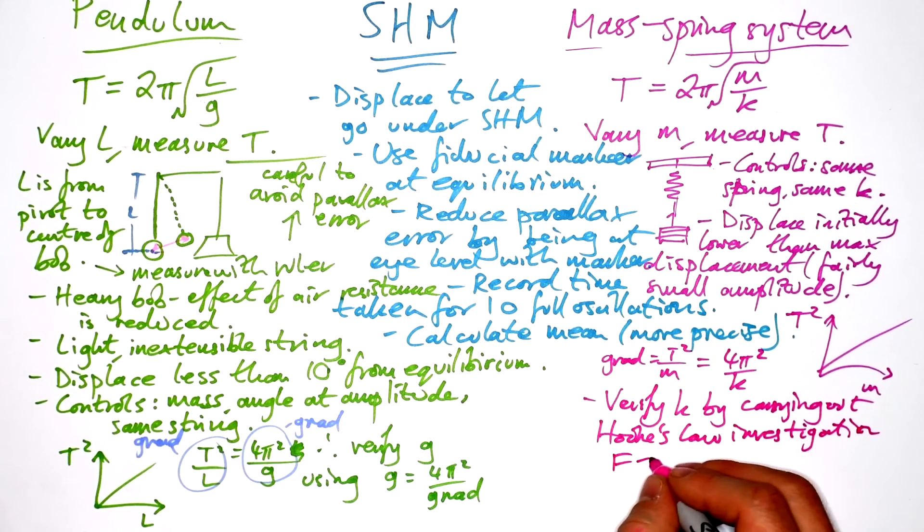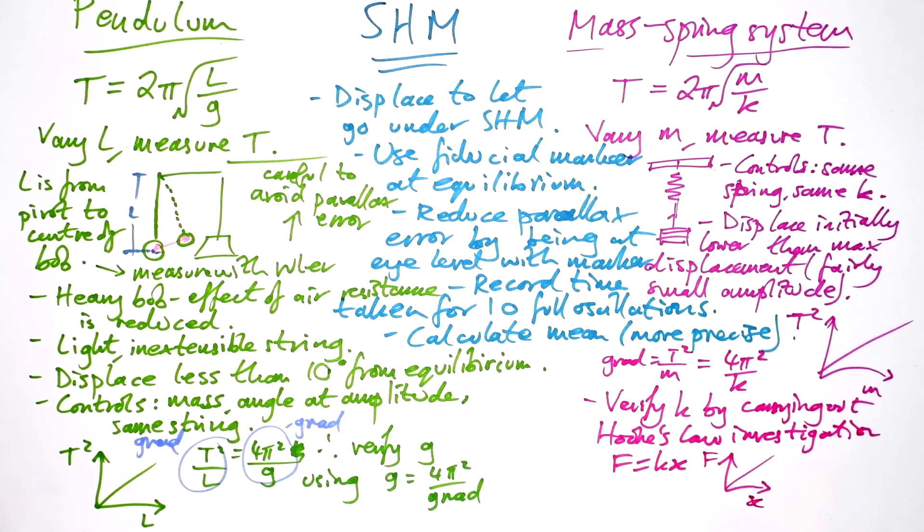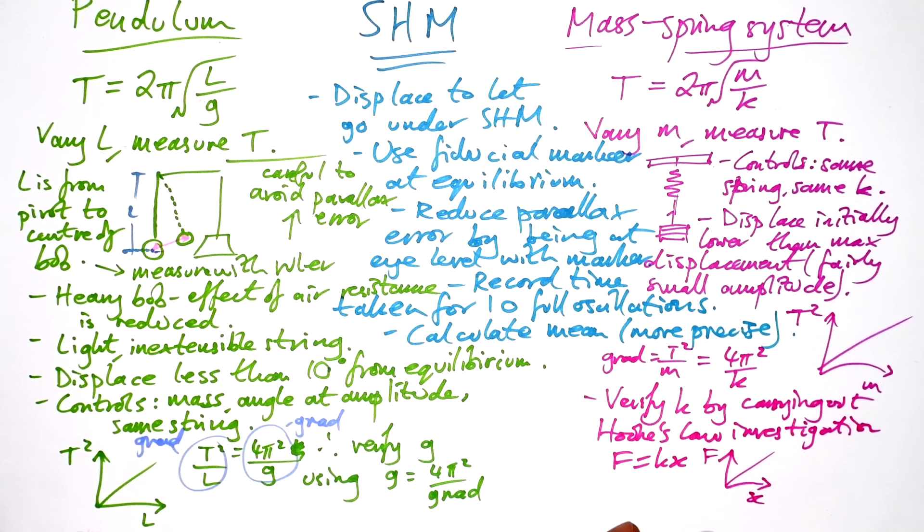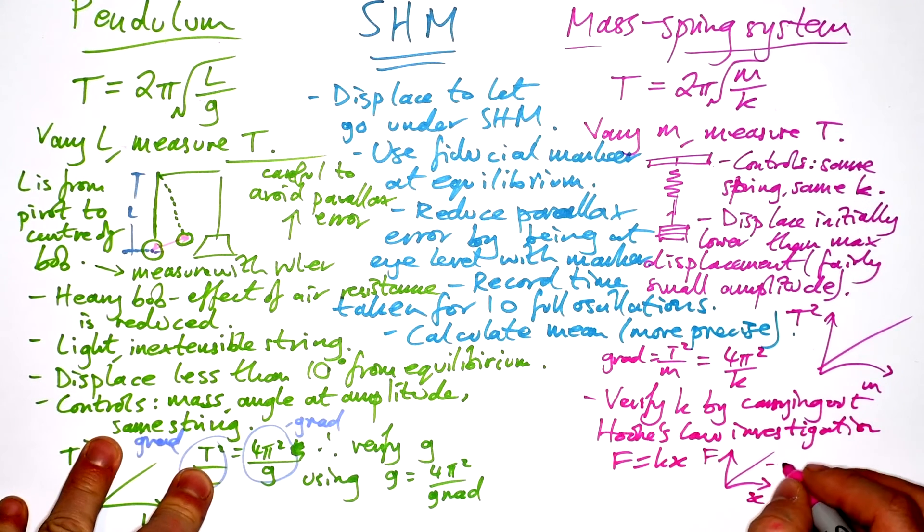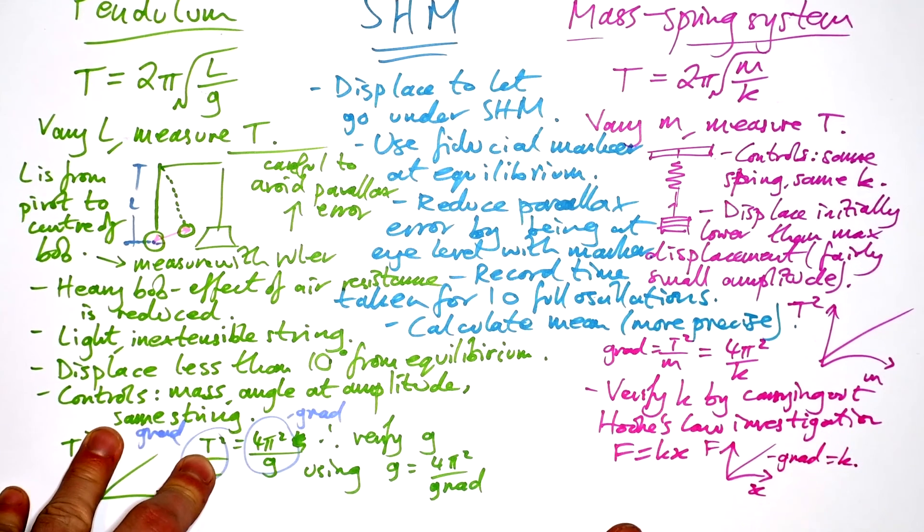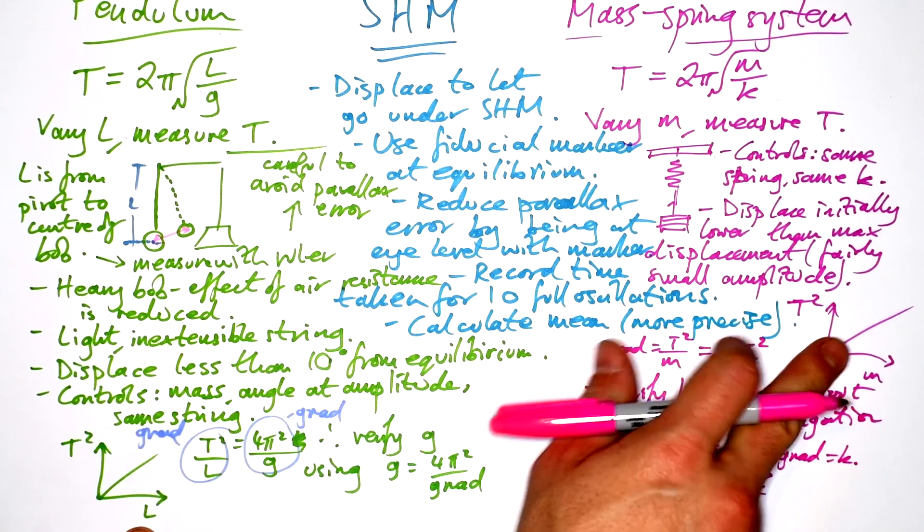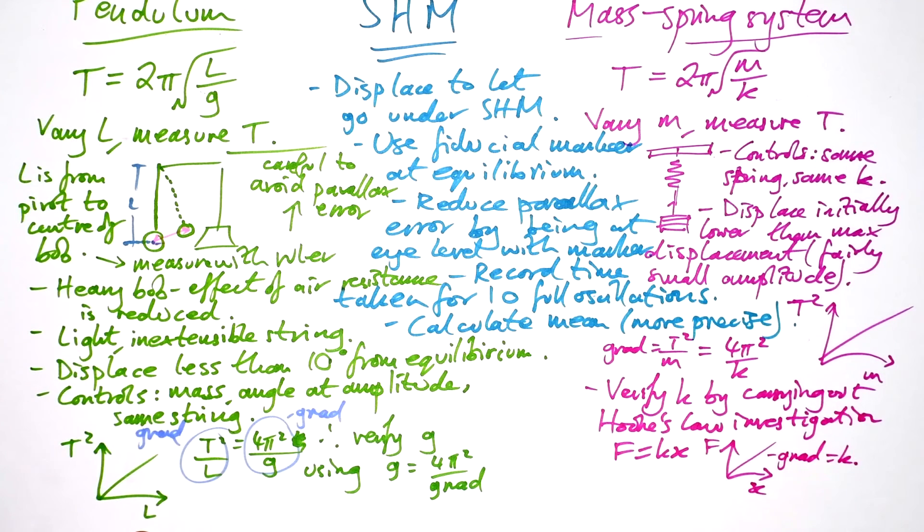We can verify k by carrying out Hooke's Law investigation. That is F equals kx. We can stretch the spring by adding on 100 grams and obviously finding our force and then finding out a gradient of that. And that's going to be equal to our spring constant. We can compare the k from our SHM experiment to the k from our Hooke's Law investigation for the same spring. Just stretch it and see how far it stretches.